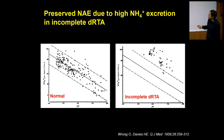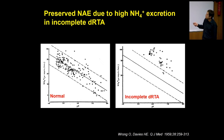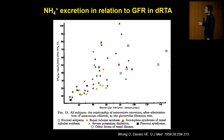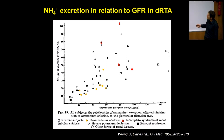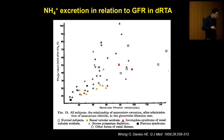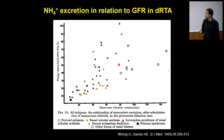Already in the late 1950s, Wrong and Davies showed that in incomplete DRTA, ammonia excretion — and as such likely net acid excretion — is actually high-normal or elevated compared to normal volunteers. Even when looking at ammonia excretion in relation to glomerular filtration, IDRTA patients have high GFR and are in the range of normals. Something we tend to forget is that in relation to GFR, patients with complete DRTA don't have impaired ammonia excretion compared to other patients with reduced GFR.